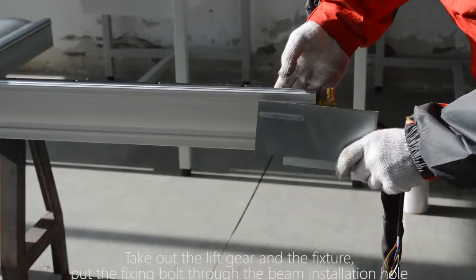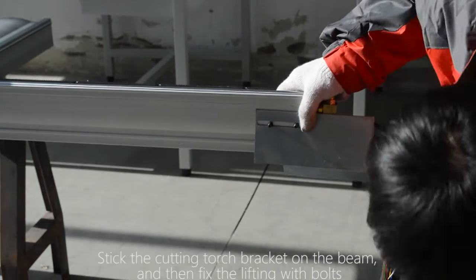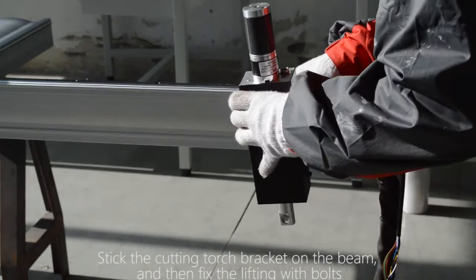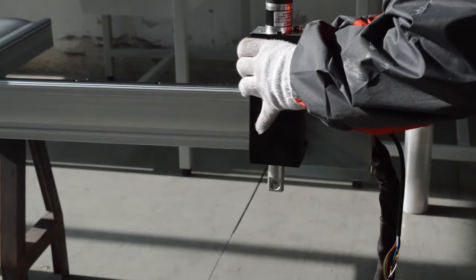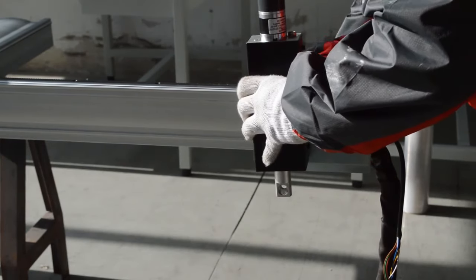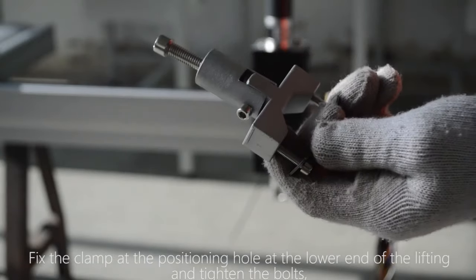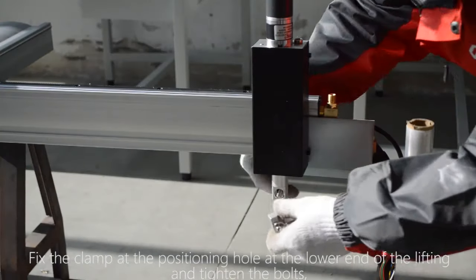Put the fixing bolt through the beam installation hole. Stick the cutting torch bracket on the beam and then fix the lifting with bolts. Fix the clamp at the positioning hole at the lower end of the lifting and tighten the bolts.